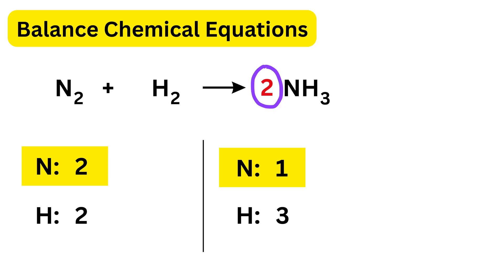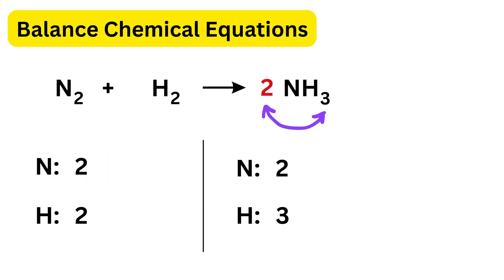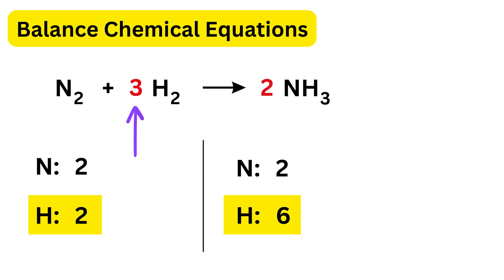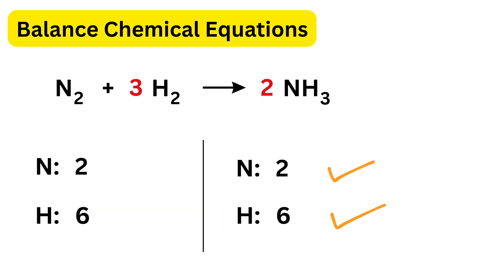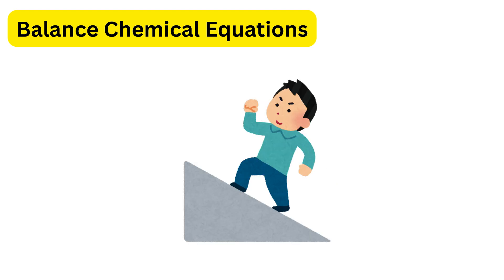We put 2 in front of NH₃, giving two nitrogens and 2 × 3 = 6 hydrogens on the right. On the left we have only two hydrogens, so we put 3 in front of H₂, giving 3 × 2 = 6 hydrogens. Both sides now have the same number of nitrogen and hydrogen atoms. This is the balanced equation.